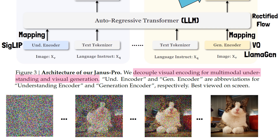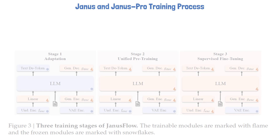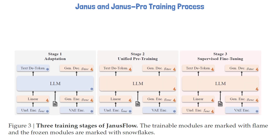We'll now proceed with discussing the Janus training process and results. Let's use the following figure from the original Janus paper and explain what is different for Janus Pro. Both Janus and Janus Pro are trained in three stages.